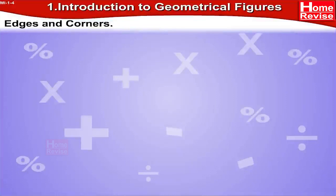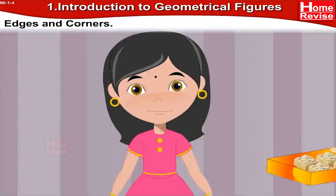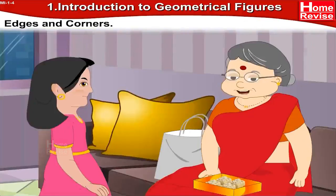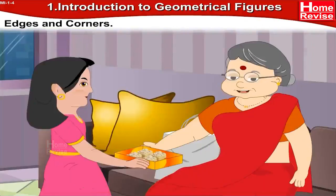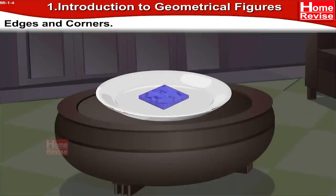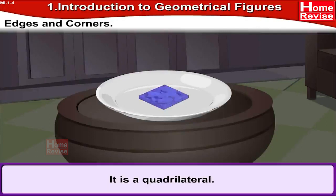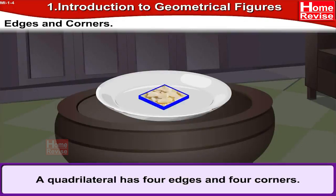Now we will learn about edges and corners. But before that, look at this piece of burfi — Sonu's grandma gave her this burfi. What is the shape of the burfi? Yes, that's correct — this piece of burfi is quadrilateral in shape. A quadrilateral has four edges and four corners: edges one, two, three, and four, and corners one, two, three, and four.